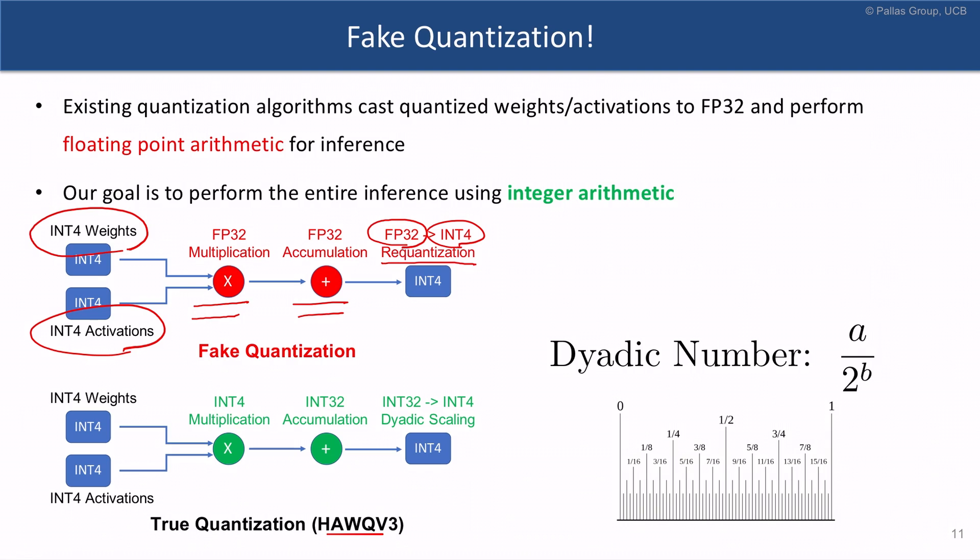After we get the results in int-32, for the re-quantization step, we perform dyadic scaling to change the number from int-32 precision to int-4. This dyadic scaling only requires integer multiplication and bit shifting. Dyadic numbers are rational numbers where the numerator is an integer number and the denominator is a power of 2.